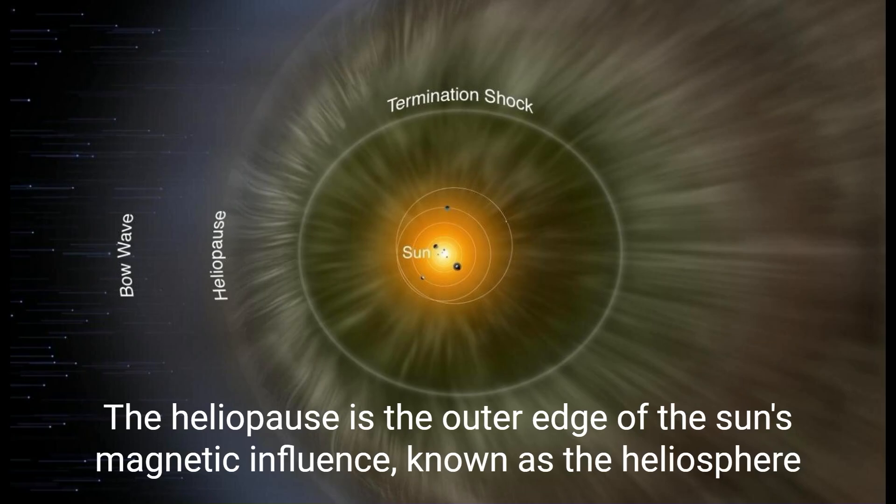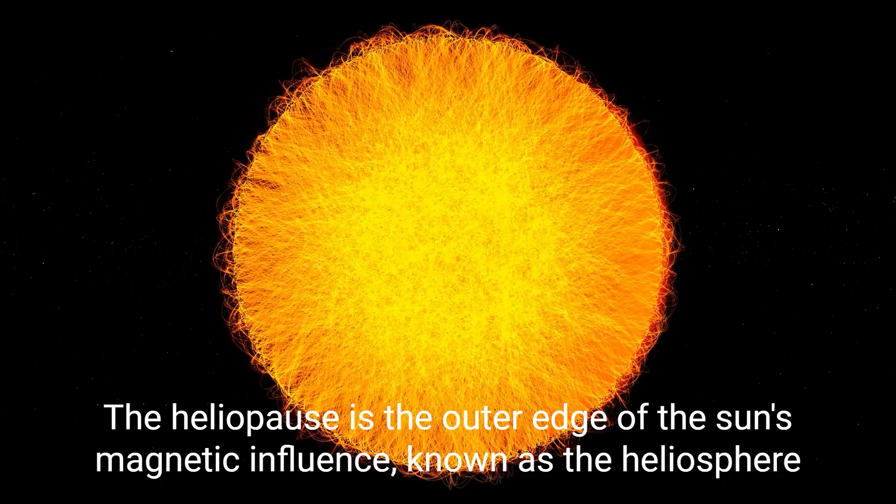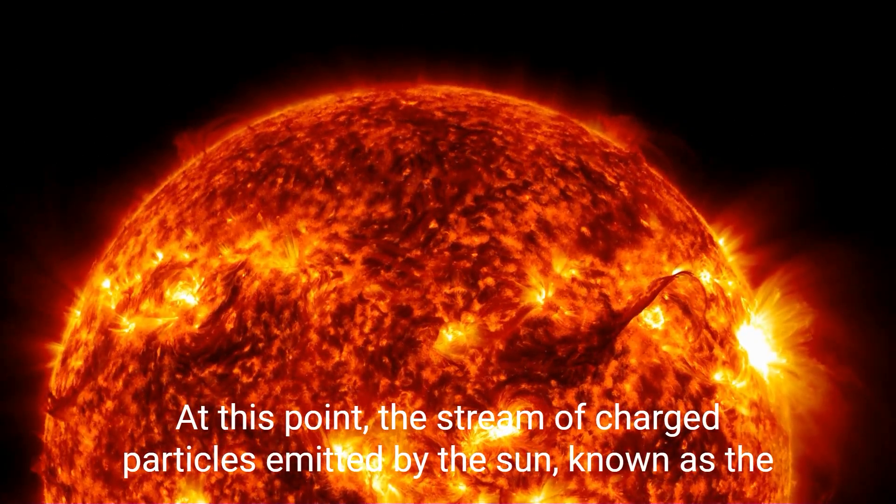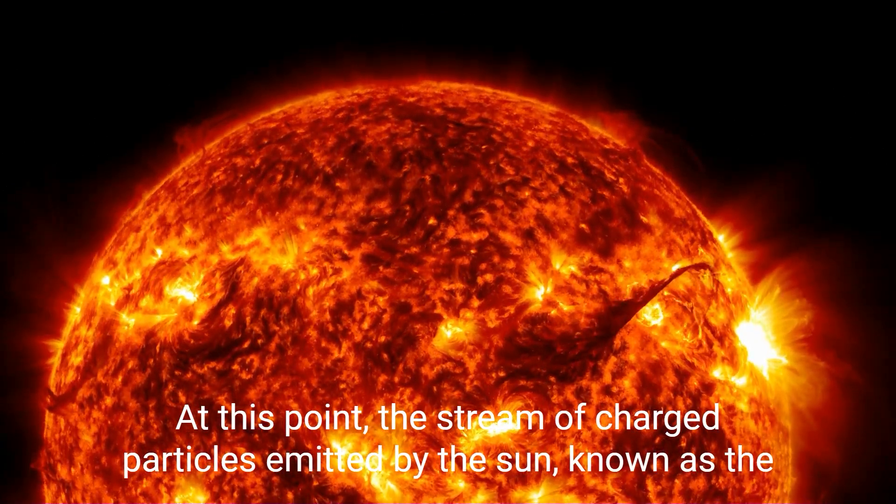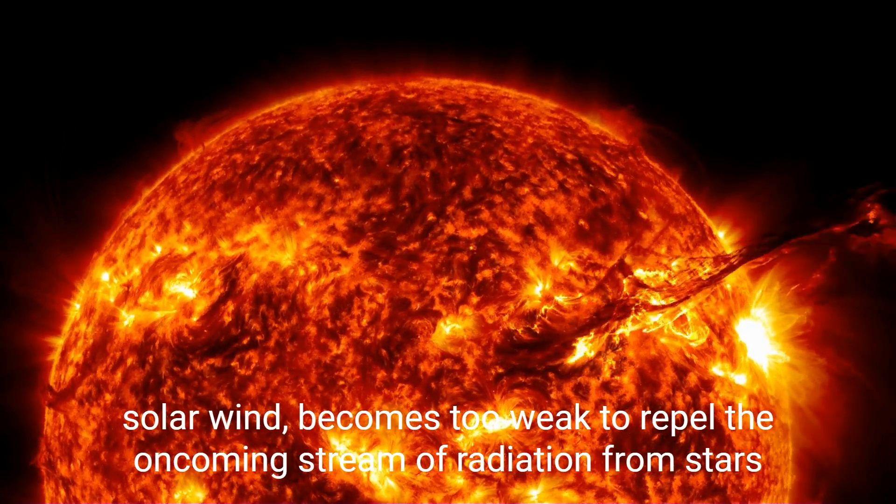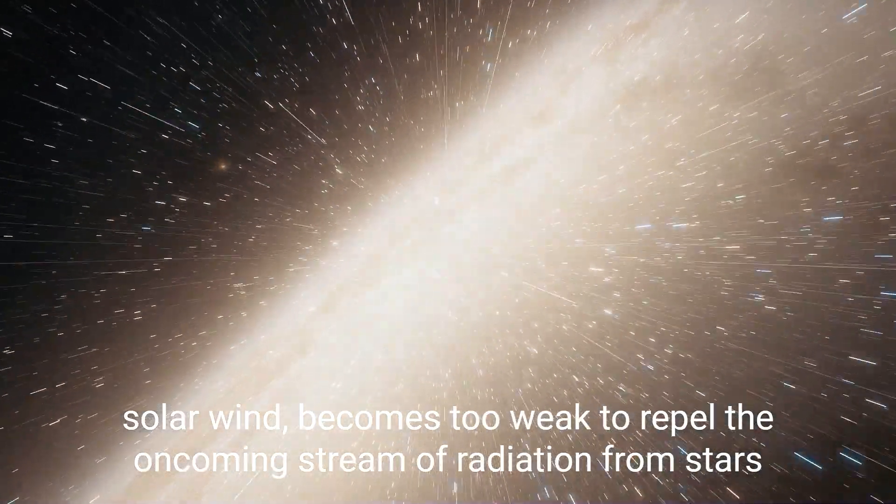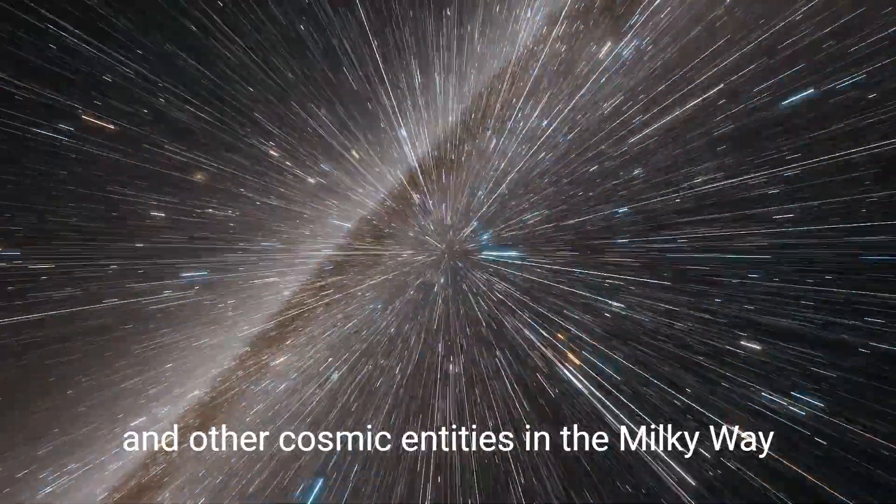Heliopause. The heliopause is the outer edge of the sun's magnetic influence, known as the heliosphere. At this point, the stream of charged particles emitted by the sun, known as the solar wind, becomes too weak to repel the oncoming stream of radiation from stars and other cosmic entities in the Milky Way.